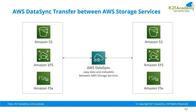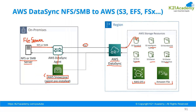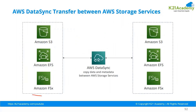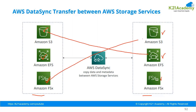DataSync also applies when migrating from cloud to cloud. This diagram explains cloud-to-cloud migration — for example, migrating from S3 to EFS, EFS to FSX, or FSX to S3. If you are changing your storage type, DataSync can help you. In that case, you don't need an agent — you can directly select the source and the destination and start the replication.